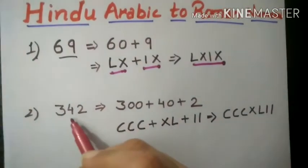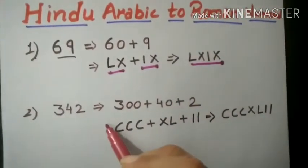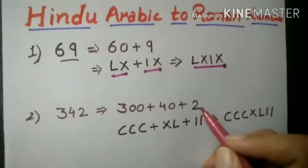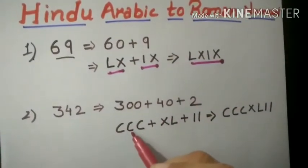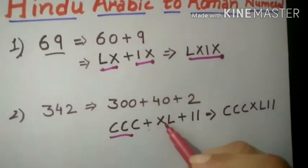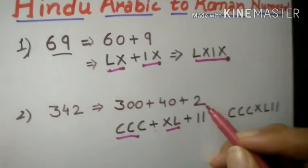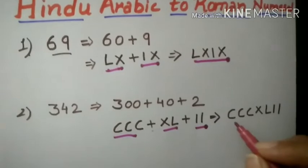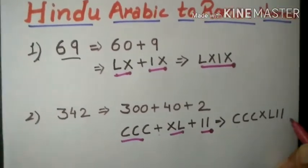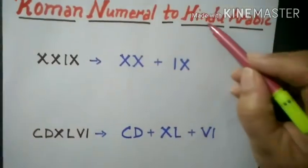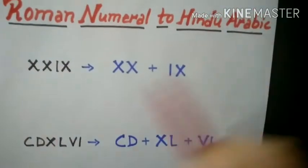Now, another example, 342. You have to expand the number 342. So, 300 means we have to write three times C plus 40 which is X L plus 2, which is two times I.